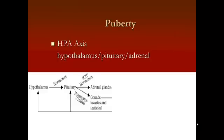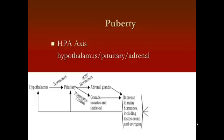The pituitary gland releases its hormones, which act on the adrenal glands and, to some extent, the gonads — the ovaries or the testicles. Once the adrenal glands and the gonads get activated, this increases hormones like testosterone and estrogen. It's these hormones that lead to the changes we see, including the physical growth spurt, primary sex characteristics, and secondary sex characteristics.